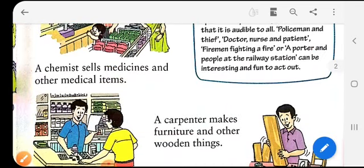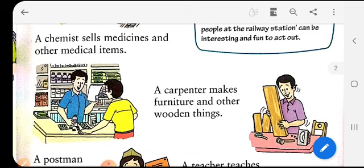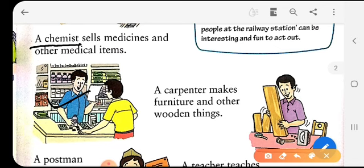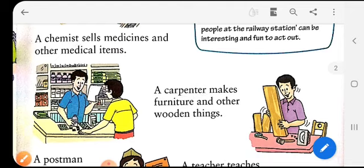Here you can see a person giving some medicine to another man. He is a chemist. A chemist sells medicines and other medical items. Next, we have a person who is working with wood. He is a carpenter. His occupation is to make furniture and other wooden things.